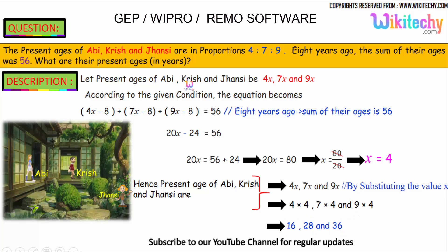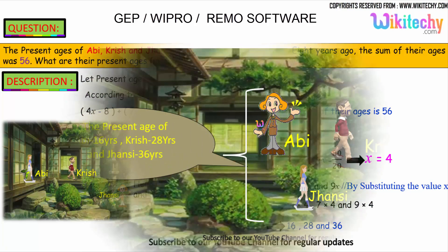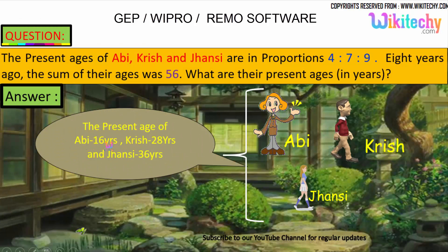The present age of Abhi is 16, Krish is 28, and Jansi is 36. Those are their ages. The final answer is 16, 28, and 36.